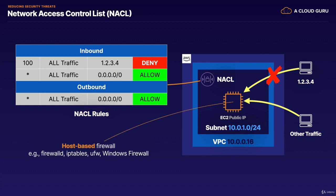In addition to a NACL, you can also employ what's called a host-based firewall. This runs directly on your EC2 instance and can serve as yet another layer of defense against bad actors. If you're running Linux, these are software packages like firewalld, IP tables, or ufw. If you're running Windows, you'll use Windows Firewall.